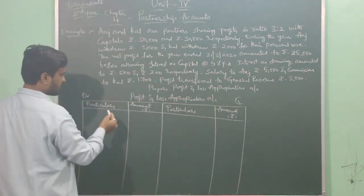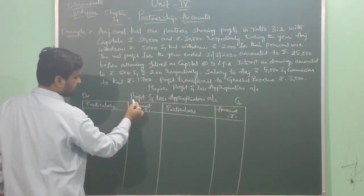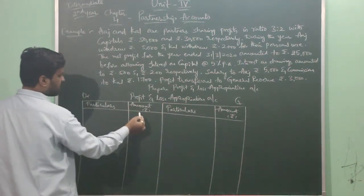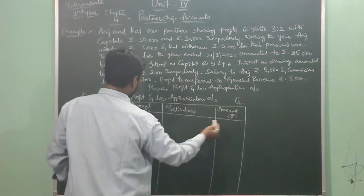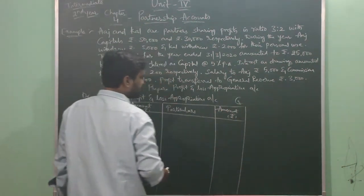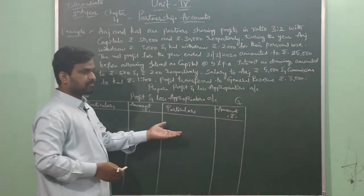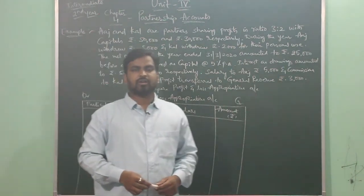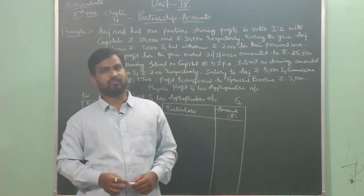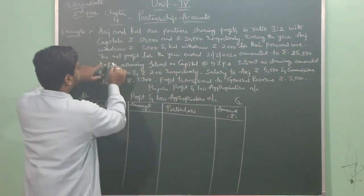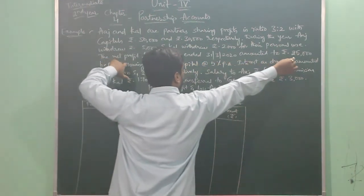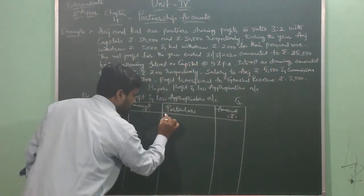Here is the format for the Profit and Loss Appropriation Account. The heading of the account will be 'Profit and Loss Appropriation Account'. The format will have: Particulars and Amount on two pieces — towards the extreme left you write DR (Debit) and towards the extreme right you write CR (Credit). We start the P&L Appropriation Account — it is always credited with Net Profit, which we carry from Profit and Loss. So here the net profit for the year ending 31st March 2020 amounted to rupees 25,000, which will be recorded as 'By Net Profit — 25,000'.